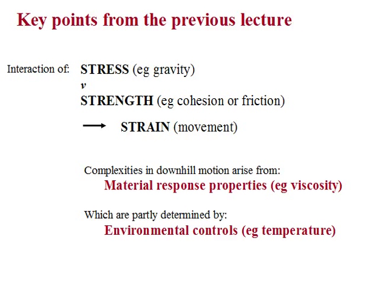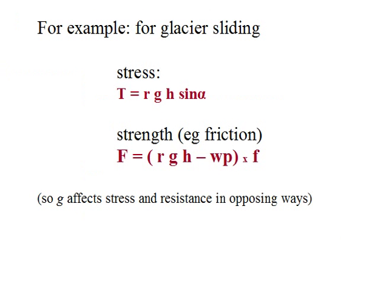The key point arising from the previous lecture is that movement or strain in geomorphic systems stems from the power of driving stresses such as gravity relative to the resisting strength of factors such as friction or cohesion. This relationship is strongly affected by the physical properties of the materials involved, which are themselves strongly affected by environmental conditions such as temperature.